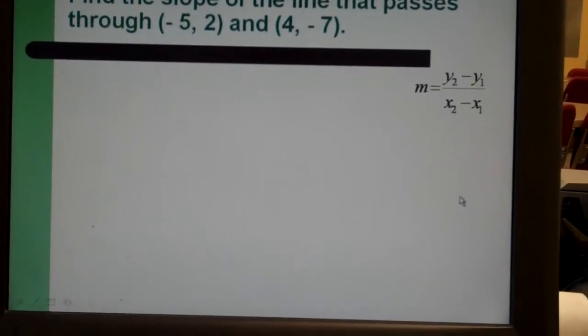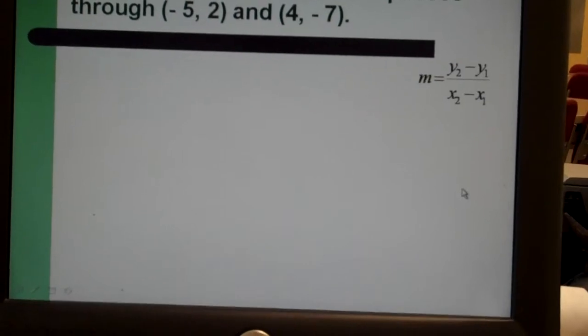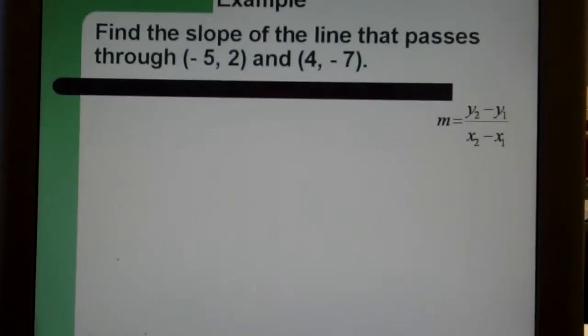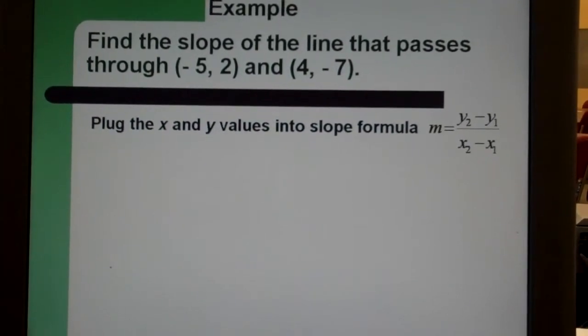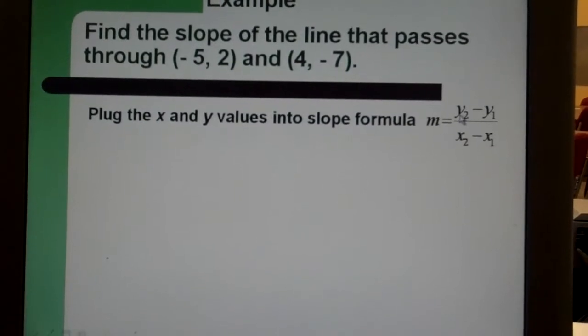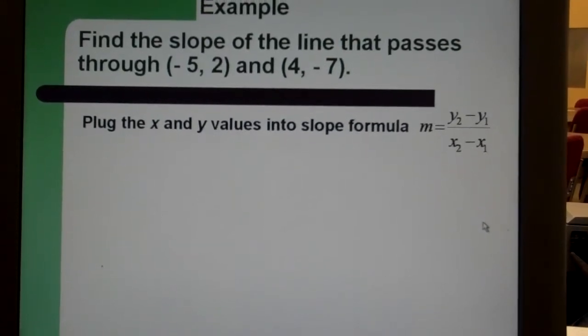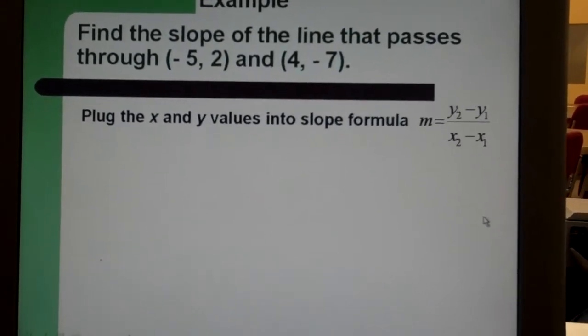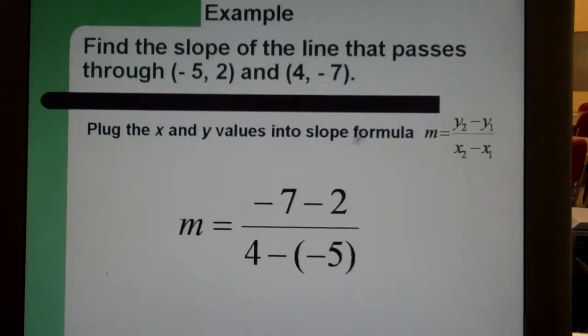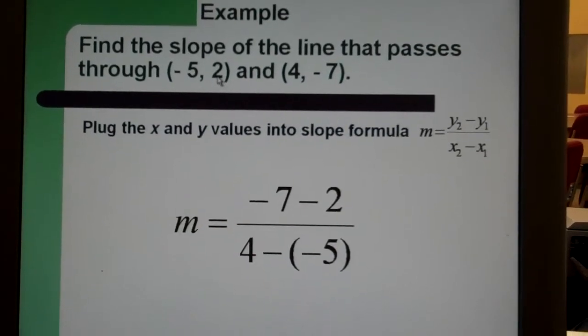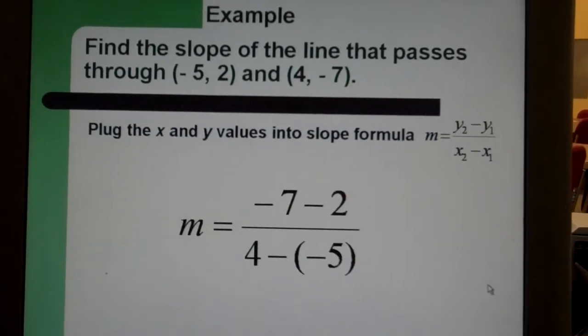Let's look at another example. We find the slope of the line through these two points, negative five comma two and four negative seven. And we do that by just plugging in the X and Y values into this formula. Y part of the second point minus the Y part of the first point over the X part of the second point minus the X part of the first point. So we would set it up so that it would look like this. Negative seven minus two over four minus negative five. That's just our setup.